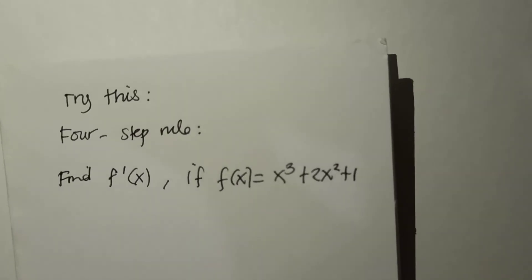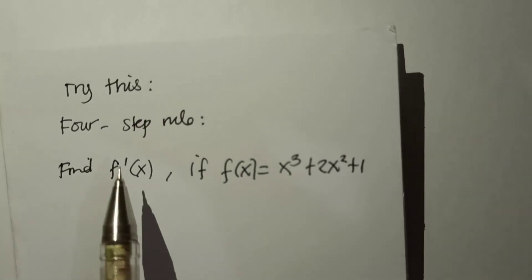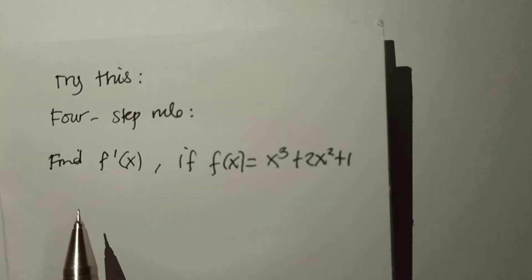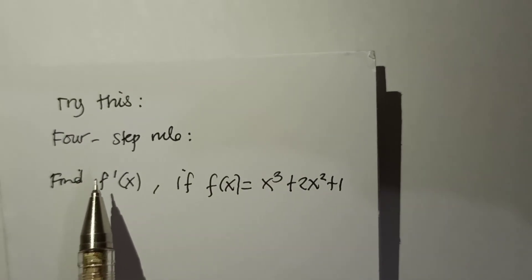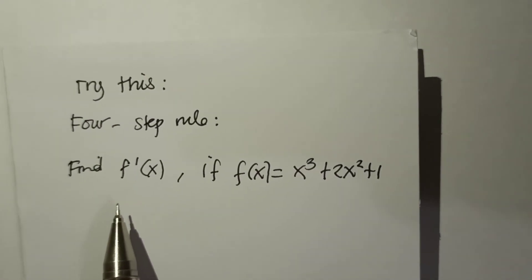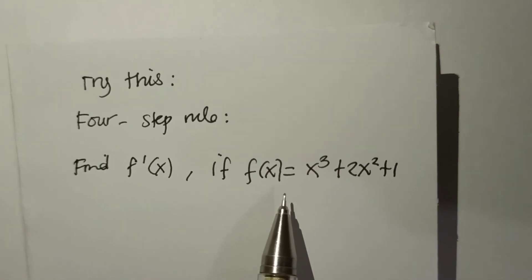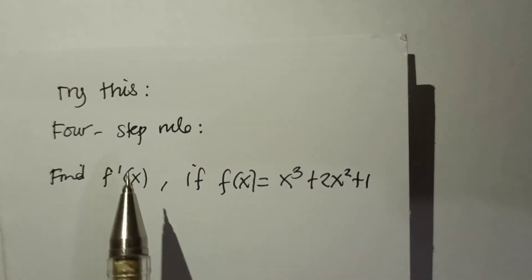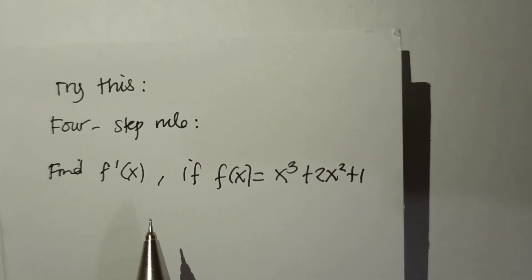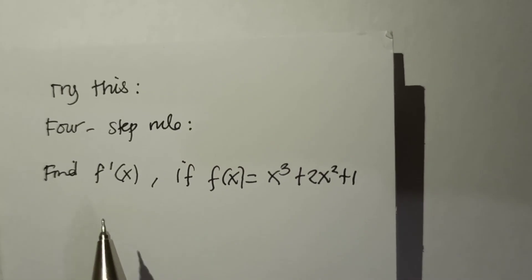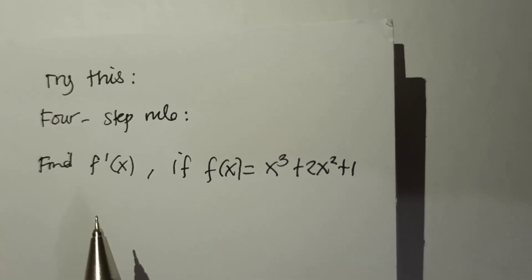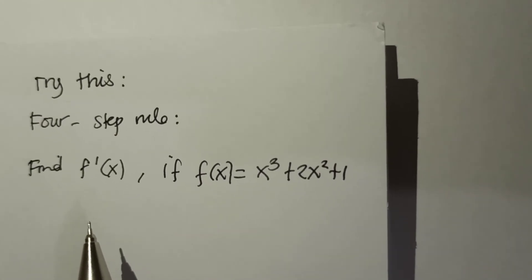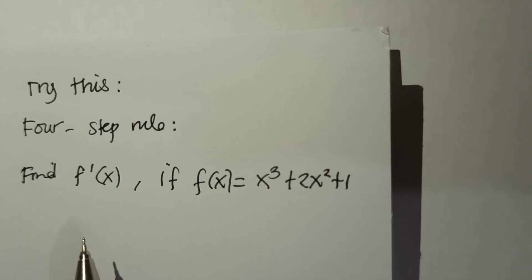Once again, you have to try this one at home: find the first derivative of the function f(x) = x³ + 2x² + 1 using the 4-step rule. You may give your solutions — just comment below.